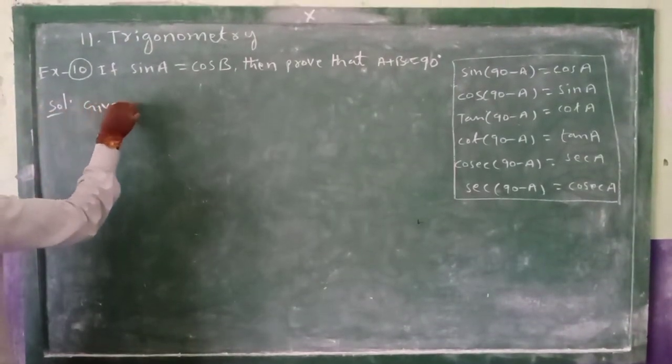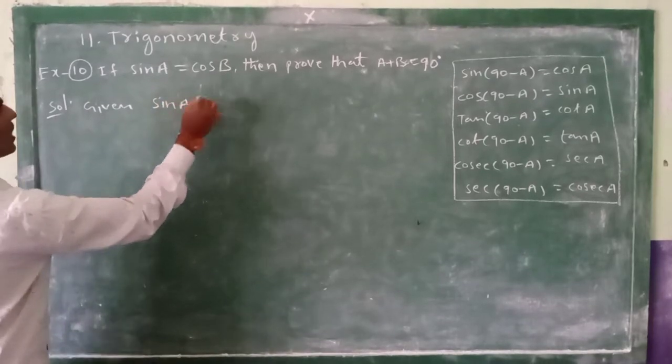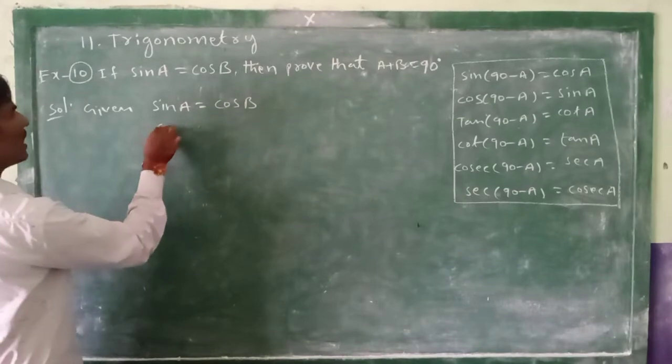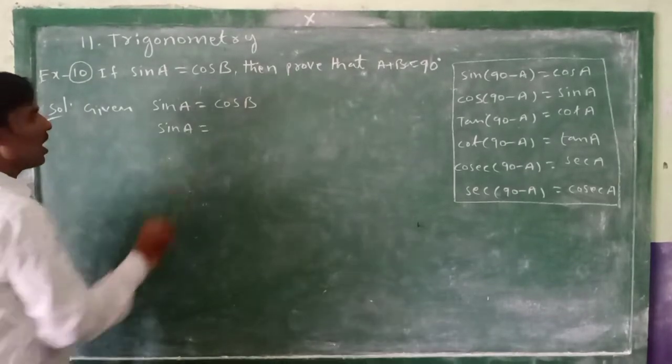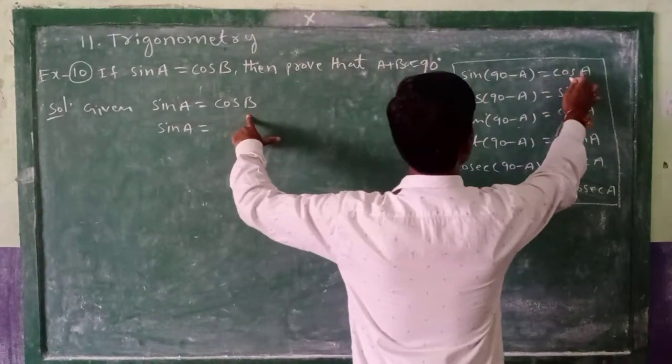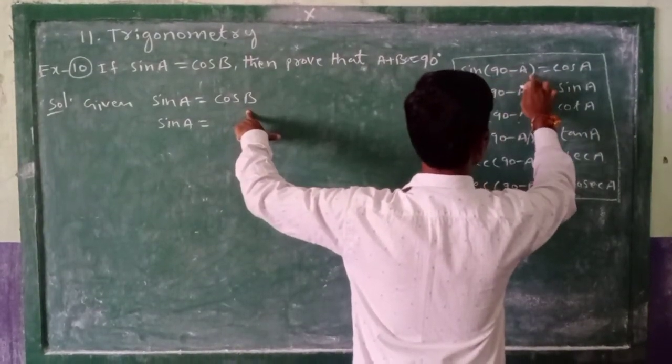First write what is given. Given: sin A equal to cos B. Sin A as you write here. Now, cos B equal to... suppose here, cos A we can write as sin(90 minus A).